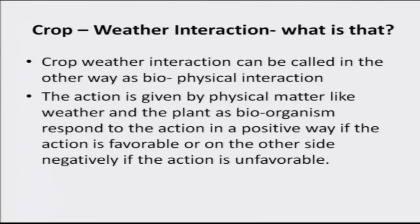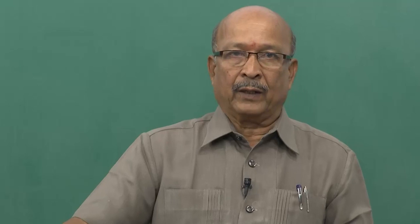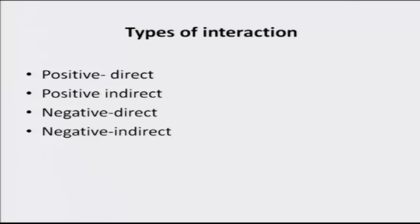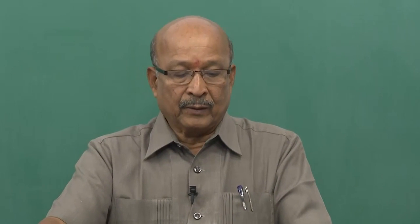Crop-weather interaction can also be called biophysical interaction. Bio means plant, physical means climate. The action is given by the physical component like weather, and the plant as a bio-organism responds to that action in a positive way if the action is favorable, or in a negative way if the action is unfavorable. There are four interaction types: positive direct, positive indirect, negative direct, and negative indirect impact on crops from climate or weather.